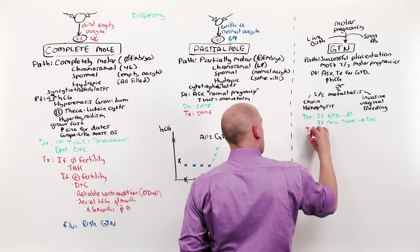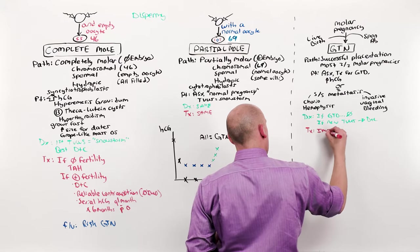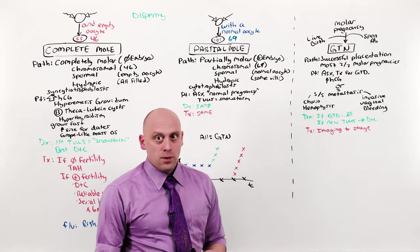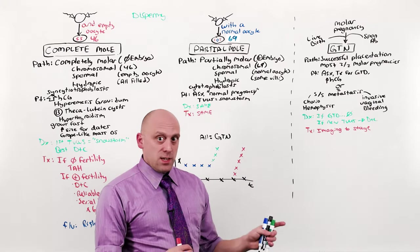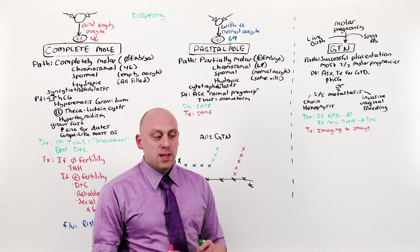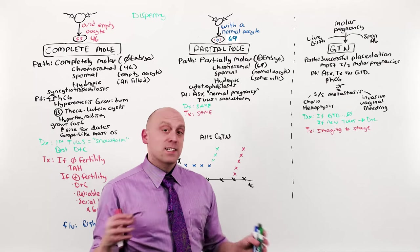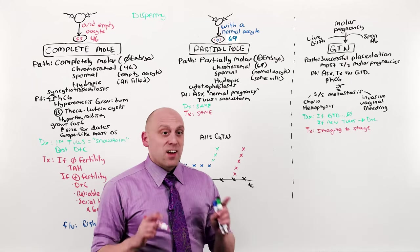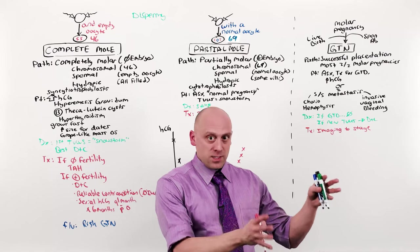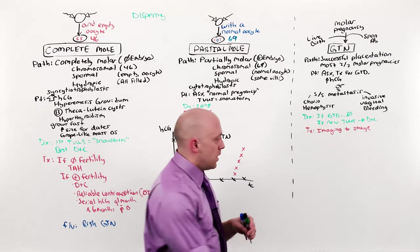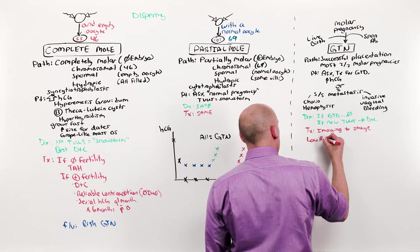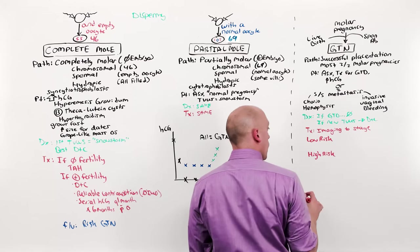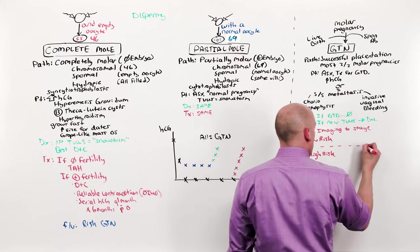The treatment is dependent on the stage. You will not have to calculate stage. But things like what type of pregnancy preceded the GTN, how old the patient is, how high the HCG is, how many metastases there are, and what sites are involved, all go into calculating the stage. But what you're going to see is obviously going to be ridiculously high in risk, or anything else. And what that comes down to is low risk and high risk. High risk is going to have many, many metastases all over the place, including the brain. Low risk is going to be lungs or uterus.